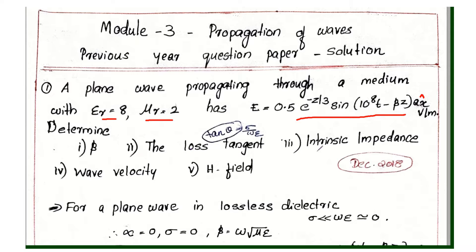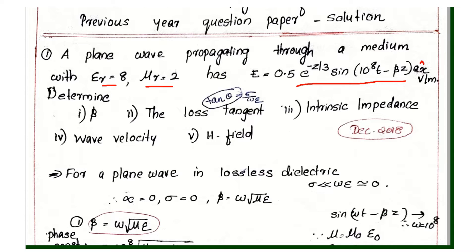Determine the loss tangent, intrinsic impedance, wave velocity, and magnetic field. We are given the epsilon r value, mu r value, and electric field.